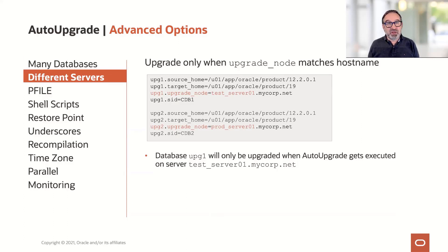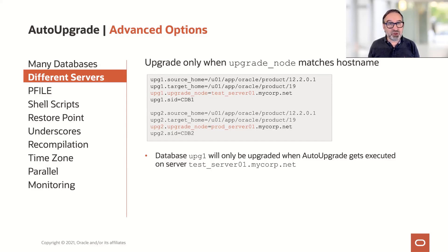Next option: you can also run the upgrade with the same config file on different servers. If you want to have one central upgrade config file for auto-upgrade, you have this parameter upgrade_node. That means only if the node name matches what you described in upgrade_node, that database will be upgraded. When I execute here the auto-upgrade with that config file on prod-server01, then the database covered with the prefix upg1 won't be upgraded — it won't even be attempted — because the upgrade_node doesn't match the actual node name of the server.